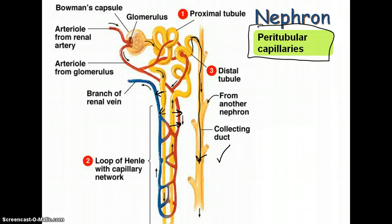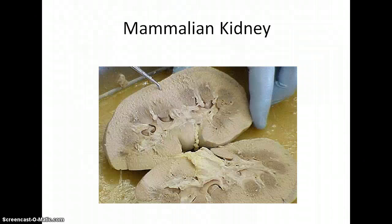Exactly what happens at each one of these junctions — at the glomerulus, the tubules, the loops of Henle, etc. — we'll get into more detail in the next video. For now, I wanted to give you an overview of the excretory system and how the kidney helps maintain many of the different homeostatic processes in your body. I hope that was helpful. We'll see you next time.